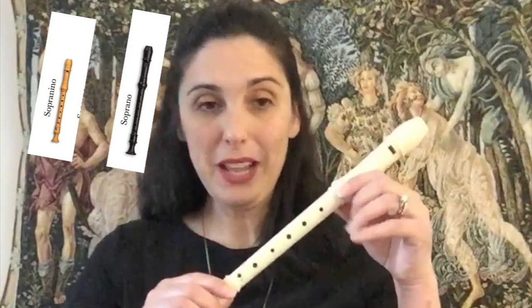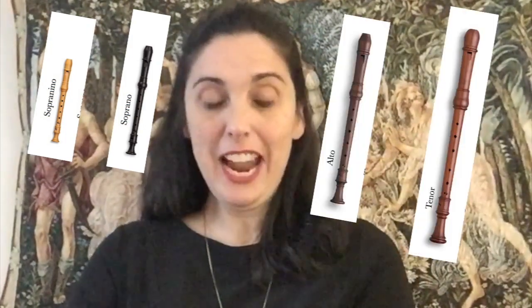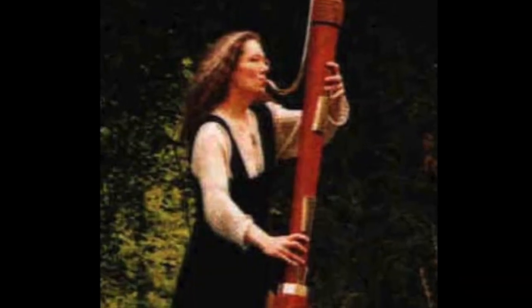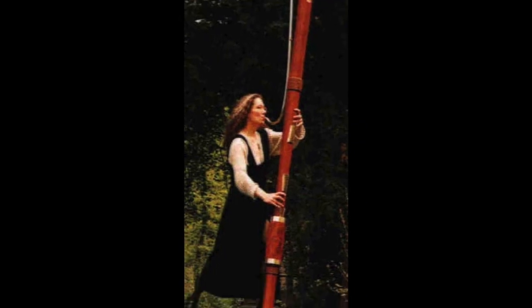The five most common recorders are the sopranino, or descant, which plays very high; soprano, which is the one most commonly played; alto; tenor; and bass. The smallest is the garklein recorder, which is only four inches long. The largest recorder is called the subcontrabass and is about ten feet long.